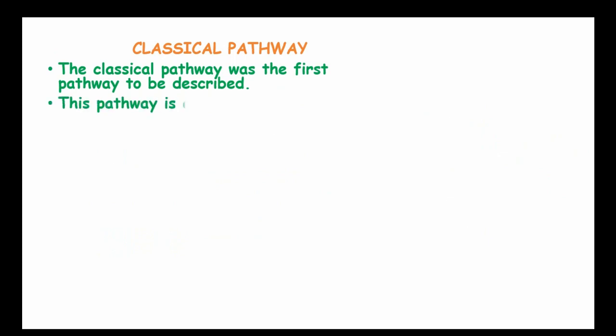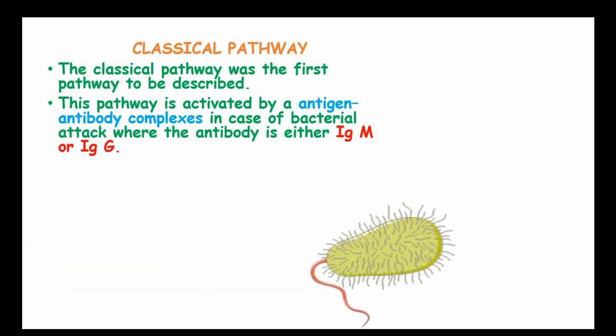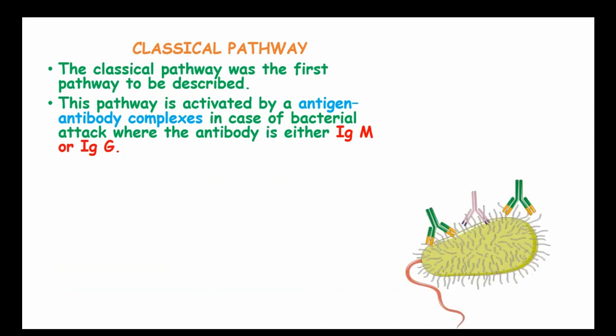Let's start with the classical pathway. The classical pathway was the first pathway to be described and is activated by antigen-antibody complexes in case of a bacterial attack where the antibody is activated immunoglobulin M or immunoglobulin G.